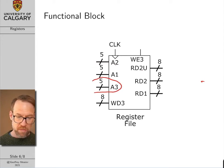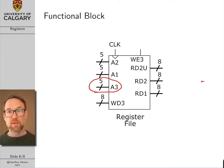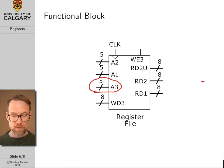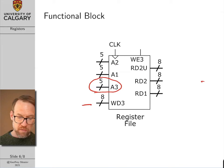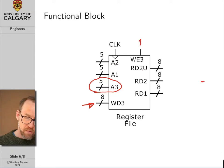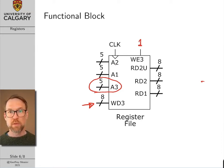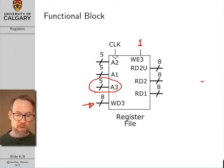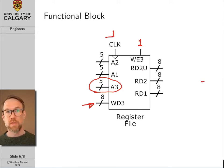The third address bus, A3, is used for writing. If we want to write to a register, we put that register number on A3, and the data present on the 8-bit WD3 bus is written to that register as long as write enable equals 1. If write enable is 1, whatever value is on WD3 is written into the register specified by A3 on the rising edge of the next clock — very similar to the data memory.